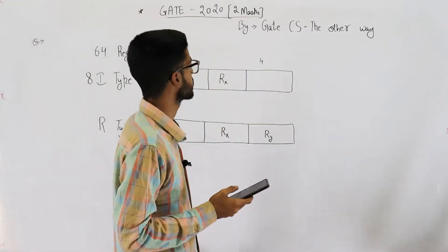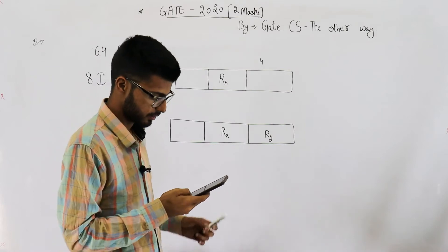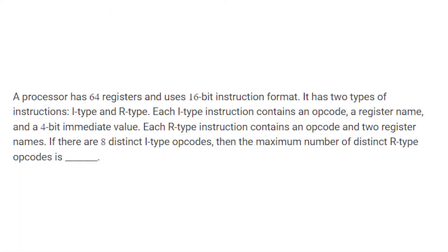Welcome back guys. This question was asked in GATE 2020 for two marks. The statement says, a processor has 64 registers and uses 16-bit instruction format.